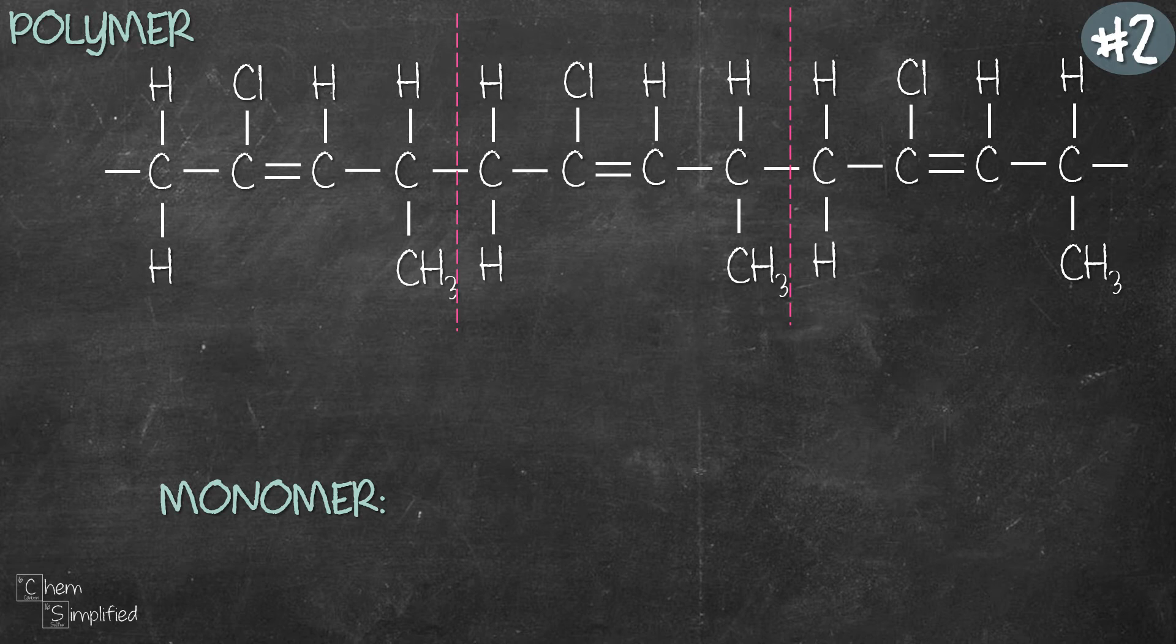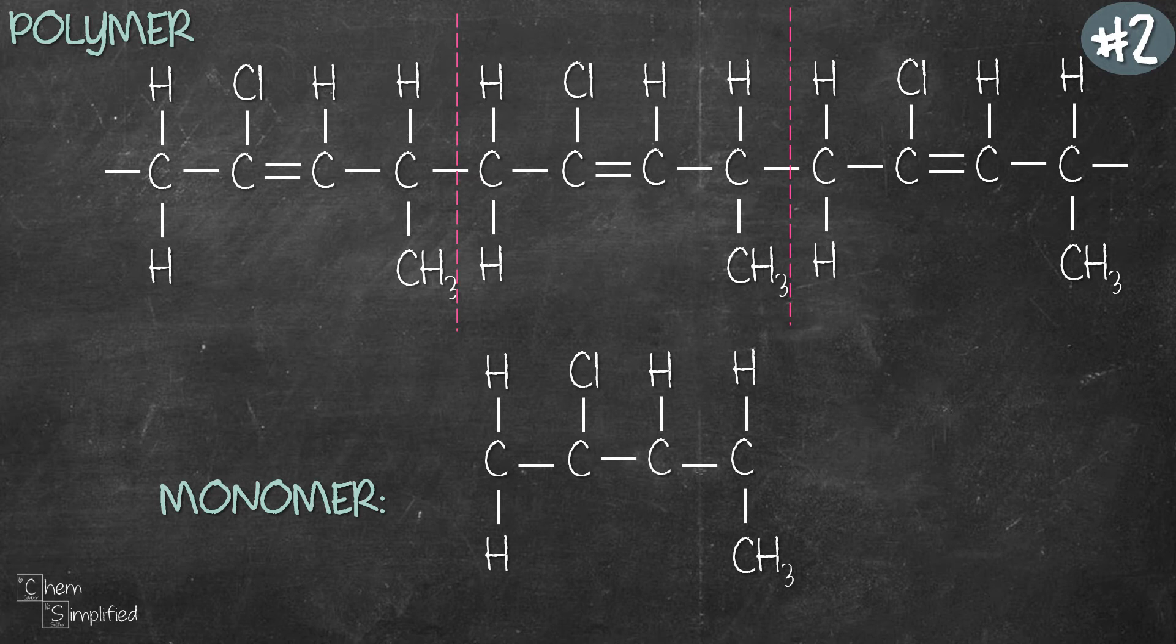Now that we have found our repeating unit, let's copy it down. Add in the double bonds. It should be double, single, double and we're done. We got the structure of the monomer from our polymer.